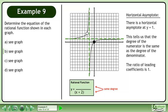There is a horizontal asymptote at y equals 1. This tells us that the degree of the numerator is the same as the degree of the denominator. The ratio of leading coefficients is 1.